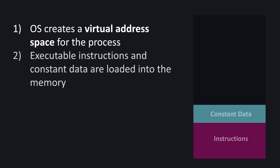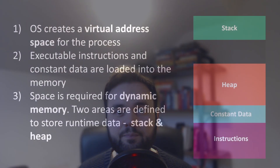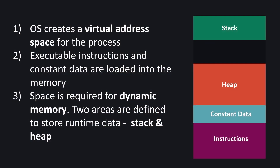Once the address space is created, we can copy the instructions from the program file itself into memory. Along with these machine instructions we'll also copy some constant data that your program will need to operate. These two regions are often read-only, and so we need another region of memory dedicated to storing dynamic results — things we can read from and write to. For reasons we'll investigate, we usually split the dynamic memory region into two segments: one called the stack and the other called the heap.